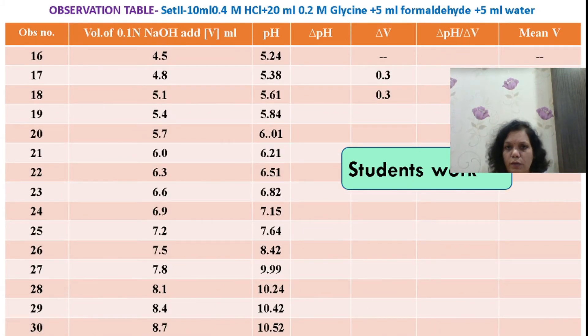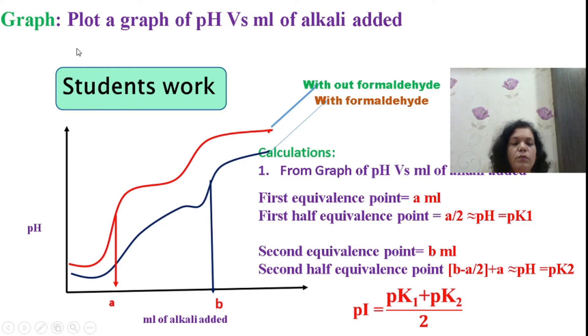Now plot a graph of pH versus ml of alkali added. The first red graph is without formaldehyde from the first titration. Find the value of 'a', which is the first equivalence point. 'a by 2' is the half-equivalence or half-neutralization point. The corresponding pH value at a/2 will give you pK1, the first dissociation constant for glycine.